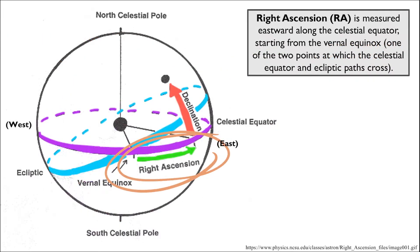Right ascension, on the other hand, is the celestial equivalent to longitude, so it is also measured from left to right. But more specifically, it is measured eastward along the celestial equator, the purple circle, starting from the vernal equinox, which is one of the two points at which the celestial equator crosses paths with the ecliptic.